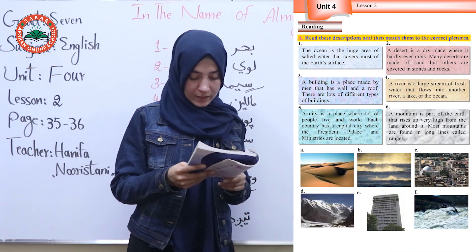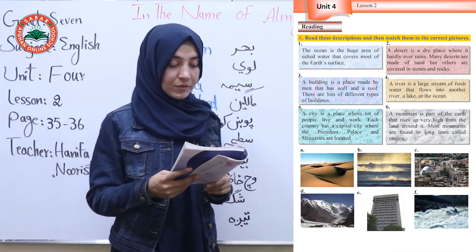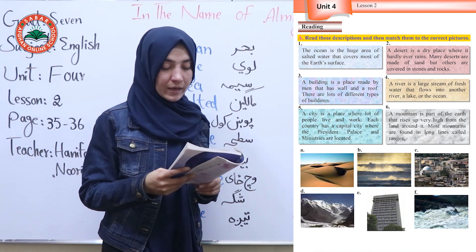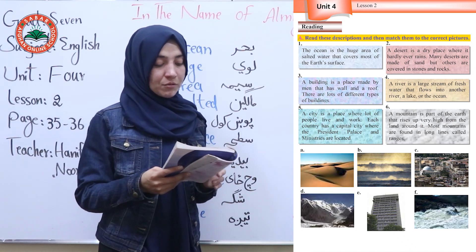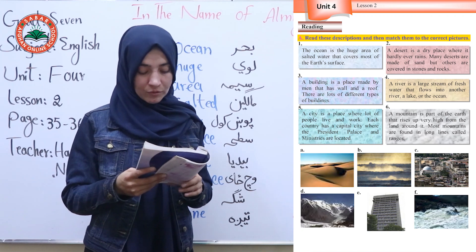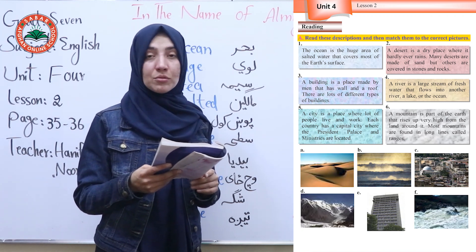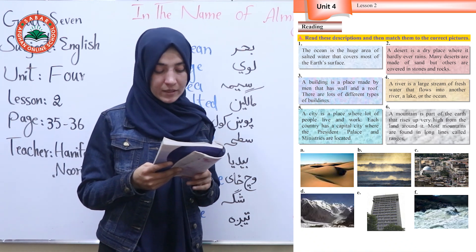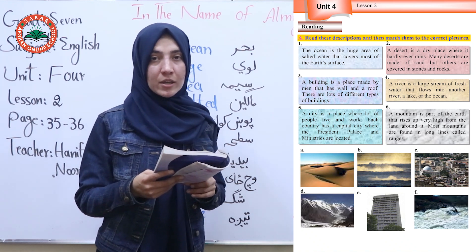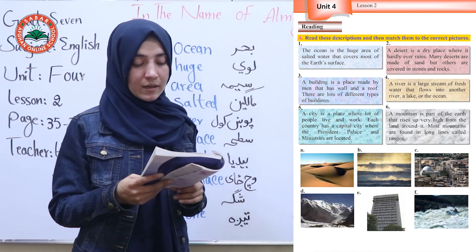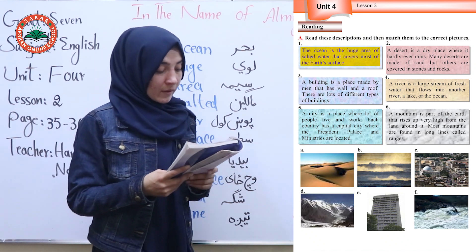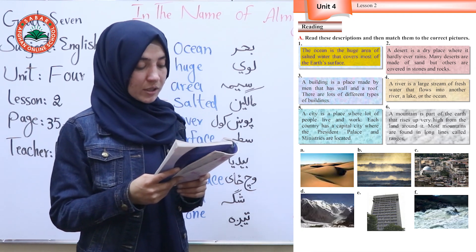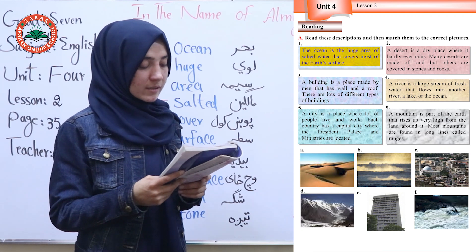Unit 4, Lesson 2, page number 35. Reading: read this description and then match them to the correct picture. Number 1: The ocean is the huge area of salted water that covers most of the earth's surface.